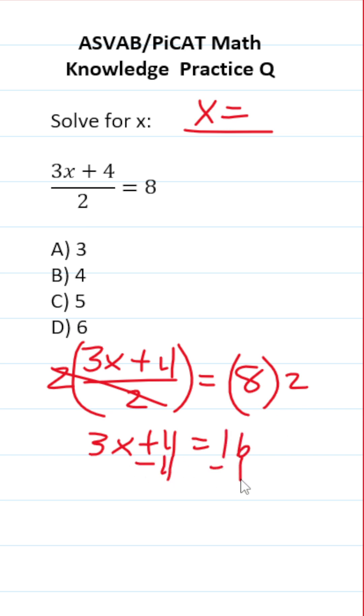Let's subtract 4 from both sides. This crosses out, leaving you with 3x on this side. 16 minus 4 is 12.